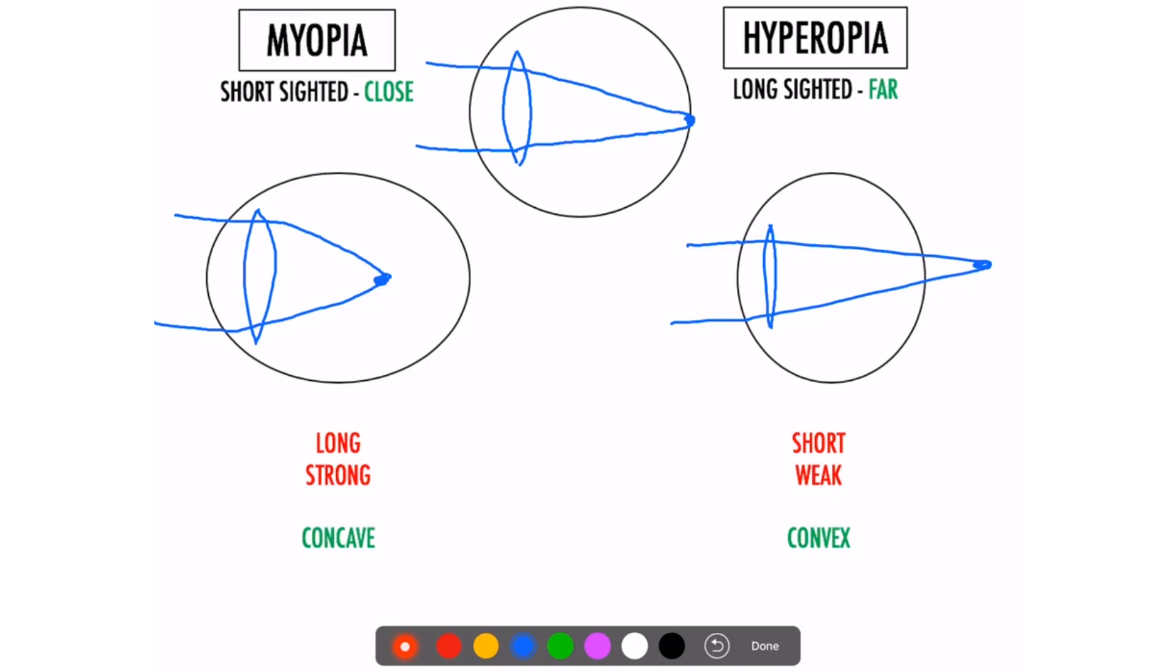Looking at myopia, the way we can fix that is we give them a convex lens which looks like this. We're going to take that, put it in front of them, so in their glasses or in their contact lenses. And what that will do is that will bend the light away first a little bit, and then when it comes back to join, it should now hit the back of the eye.